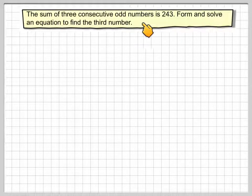The sum of three consecutive odd numbers is 243. Form and solve an equation to find the third number.